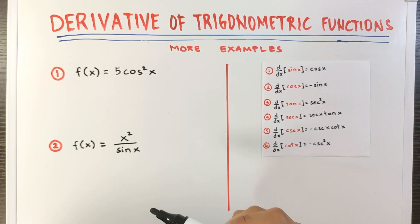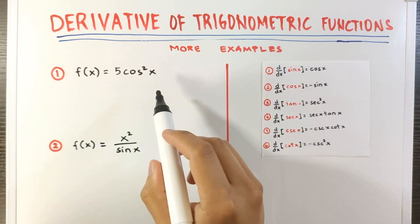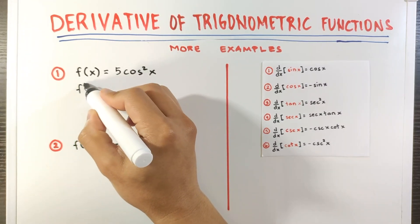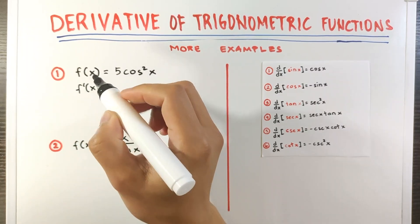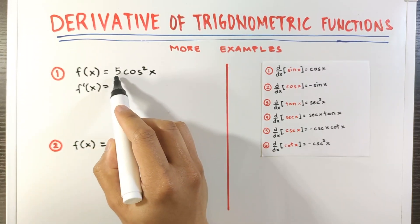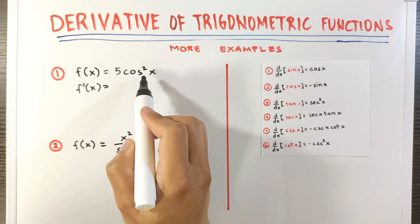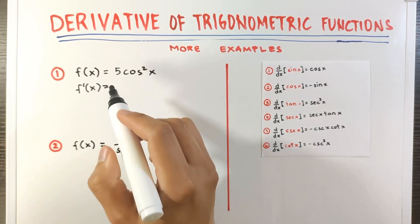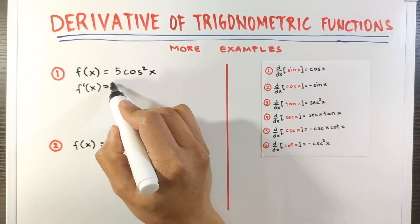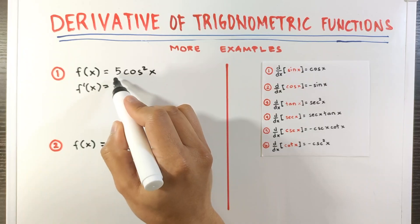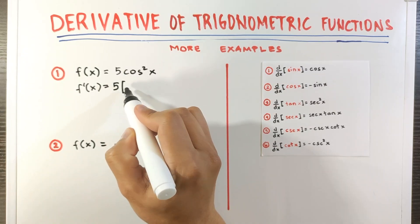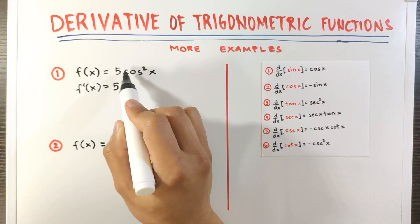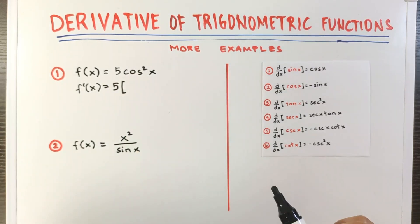Let's begin. For number 1, we have f of x equals 5 cosine squared x. So its derivative is equal to — this is a constant times a function, which means we need to use the constant multiple rule. We simply need to copy the constant and multiply it by the derivative of the function adjacent to it.